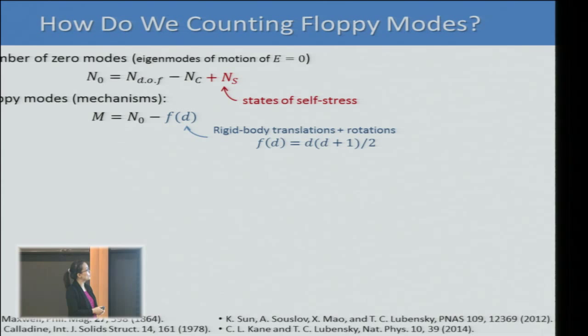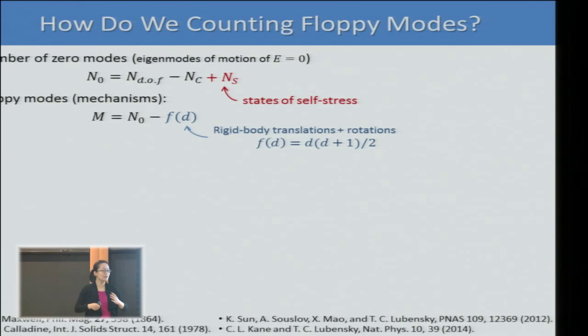This n-zero gives you the total number of zero modes in the whole system, including both mechanisms or floppy modes (relative motions) and also the trivial rigid body motion. If you want mechanisms, you subtract the rigid body degrees f_d from n-zero. f_d is three in two dimensions (two translations and one rotation) and six in three dimensions.